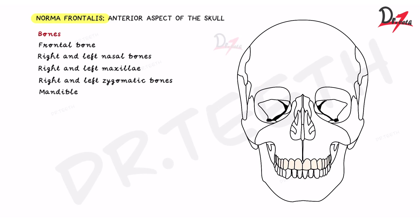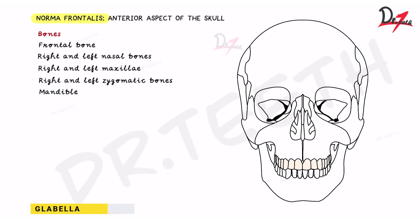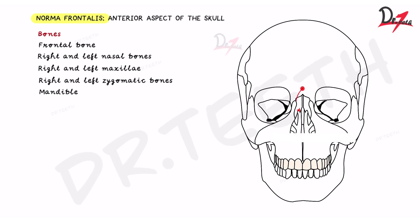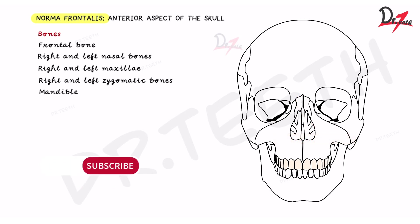Above the superciliary arches we have the frontal prominence on the frontal bone. Then we have the glabella — if you look in between the two superciliary arches you will find another elevation, and that elevation is the glabella. It is a median elevation between the superciliary arches.